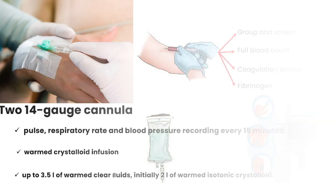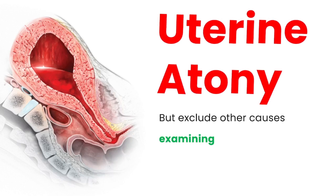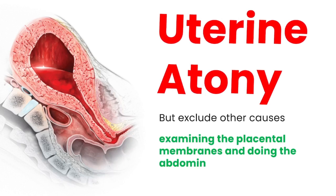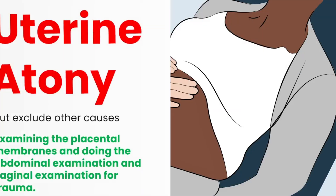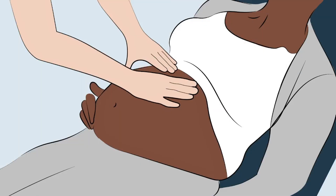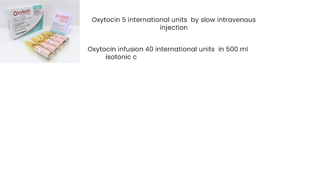The most common cause of primary PPH is uterine atony. Exclude other causes by examining the placental membranes and performing abdominal and vaginal examination for trauma. Palpate the uterine fundus and rub it to stimulate contractions, and ensure the bladder is empty. Give oxytocin 5 international units by slow intravenous injection, followed by an oxytocin infusion of 40 international units in 500 ml isotonic crystalloid at 125 ml per hour, unless fluid restriction is necessary.